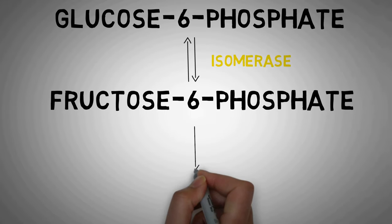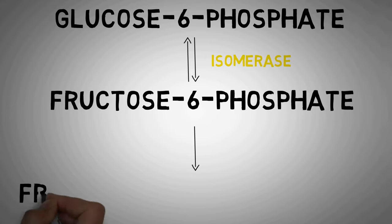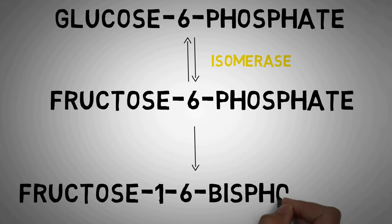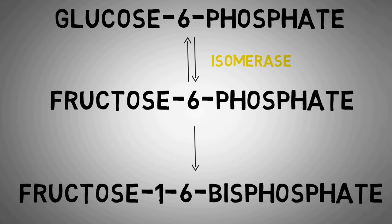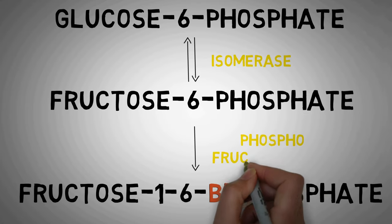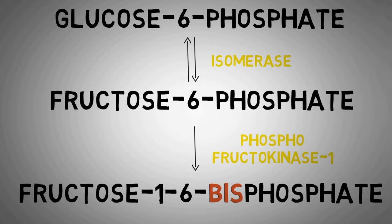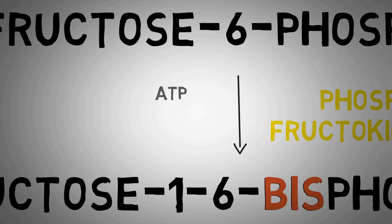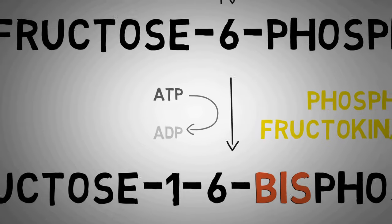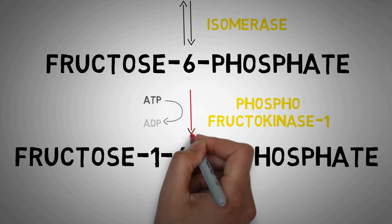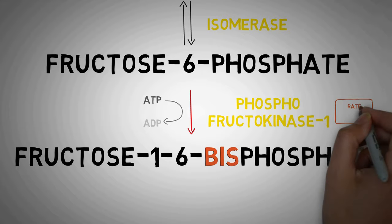After the formation of fructose-6-phosphate comes a very important step in which an additional phosphate group is attached to the fructose-6-phosphate, making it fructose-1,6-bisphosphate. Bis stands for 2, indicating that it now has 2 phosphate groups. This addition of another phosphate group is catalyzed by the enzyme phosphofructokinase-1. Again, kinases transfer a phosphate group from one molecule to another — here from ATP to fructose-6-phosphate, converting ATP to ADP. Note that we are using energy in this reaction too. This reaction is irreversible because it is energetically favorable in this direction only, and it is also very important because it helps control the rate of glycolysis.